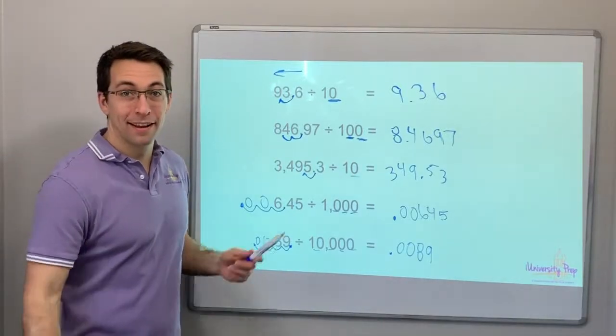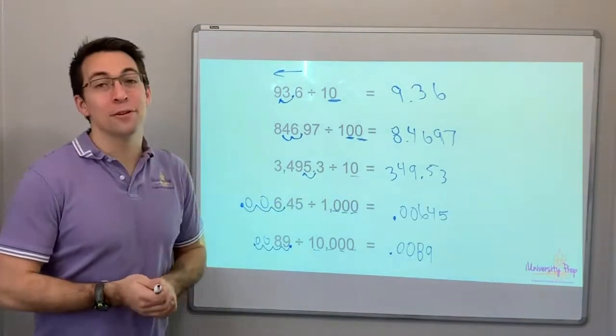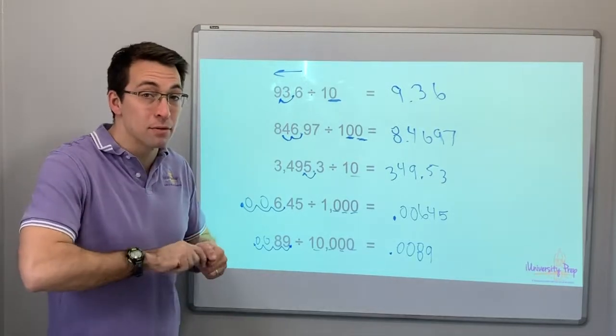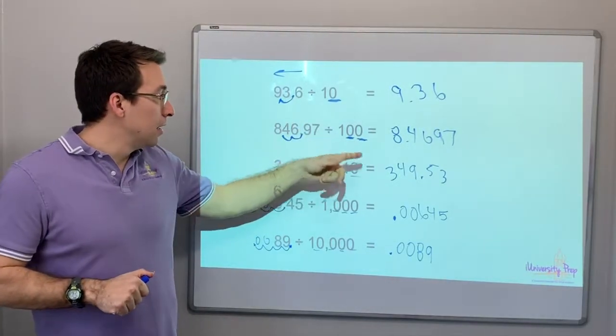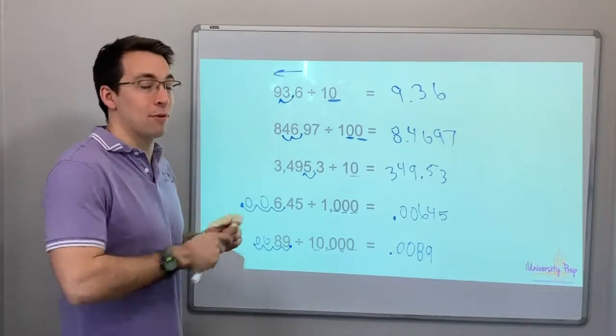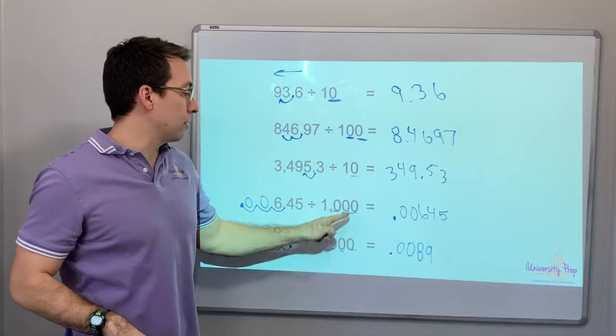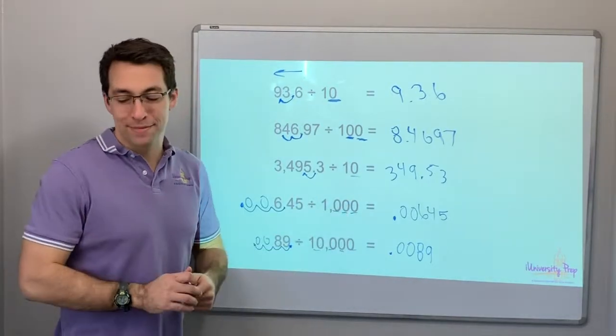All right. That's it. Guys, thank you so much for tuning in. I hope this makes sense about dividing numbers by powers of 10. You move the decimal of that number to the left, the same number of zeros as are in the power of 10. Thanks, guys.